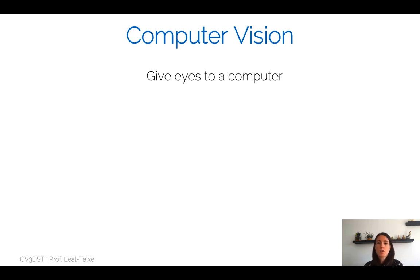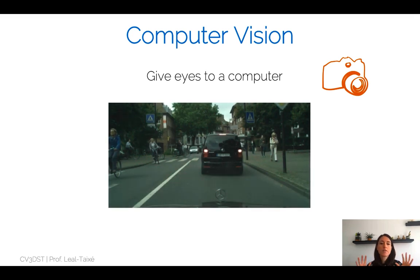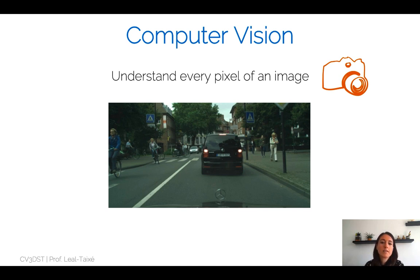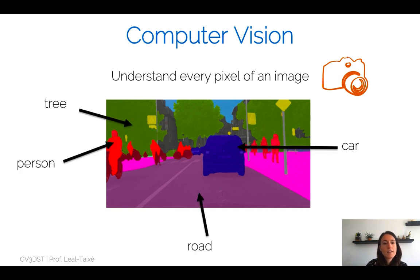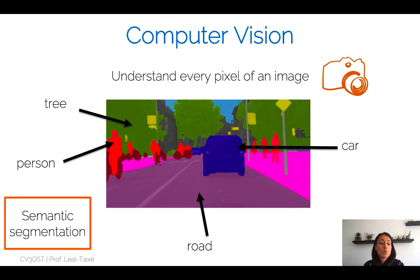In computer vision, we want to give eyes to a computer. We want to look at the world through a camera and try to understand every pixel that is provided by that camera. This matrix of numbers — this image — is the only thing we have to interpret the world around us. We want to interpret the world in a semantic way: know where the car is depicted in the image, which pixels belong to a car, a tree, a person, or the road. This task is called semantic segmentation, and we will cover how to approach it with deep learning.